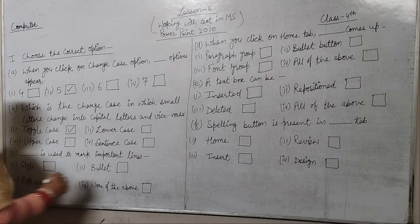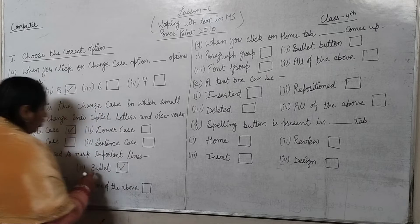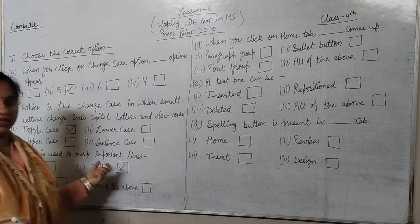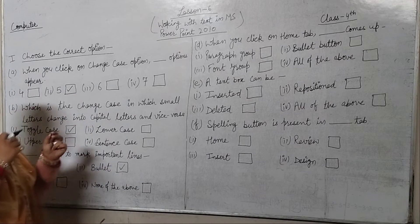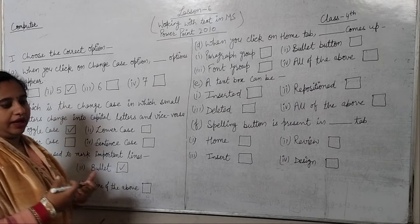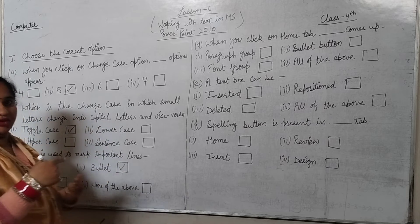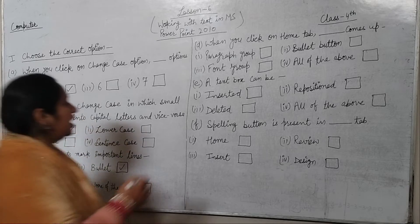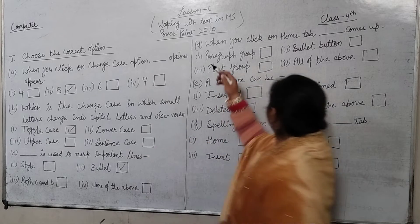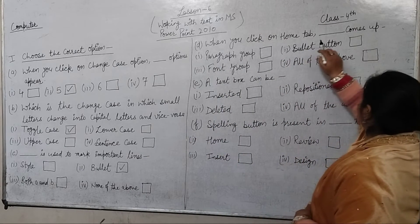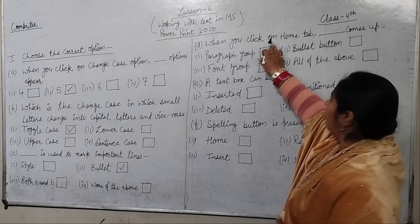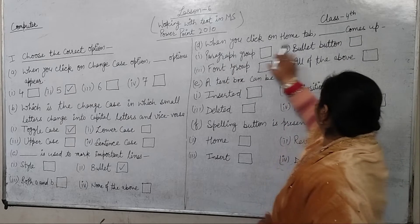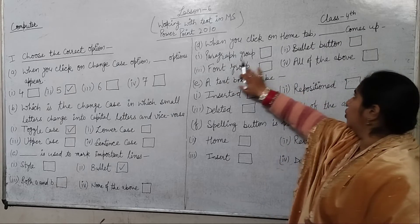When you click on a note, portrait lines appear. When you click on Home tab, something comes up. What is the particle name? Options are Paragraph Group, Bullet Button, Font Group, or all of them.